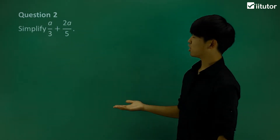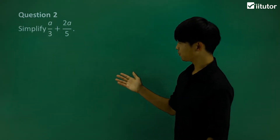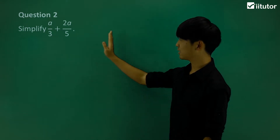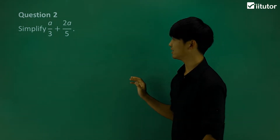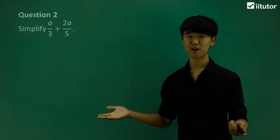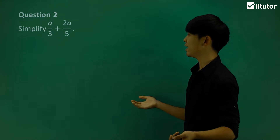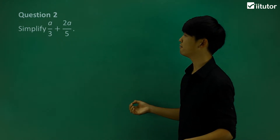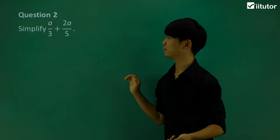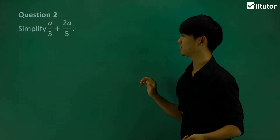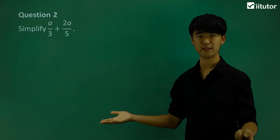Let's jump straight into question number 2. The expression I have to simplify is a over 3 plus 2a over 5. Again, we have two different denominators, so how are we going to simplify this question?